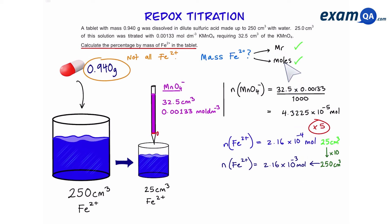So, we know moles and MR. To find mass, all we have to do is multiply them together. And that gives us 0.12 grams.